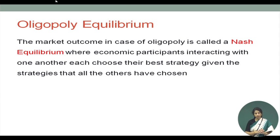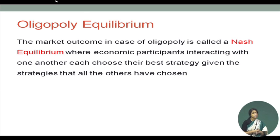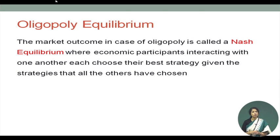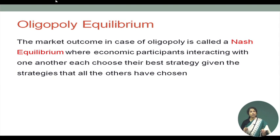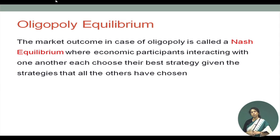As we saw in the earlier example, the firms do not settle at the monopoly outcome. Although the monopoly outcome gives them the highest level of profit, they move on to produce more output, ending up at a market equilibrium where they have no incentive to move away from. Each of the firms ended up producing 40 units of output instead of 30 units, getting a profit of rupees 800 against the monopoly profit level of rupees 900 — had they stuck to the monopoly output of 30 units each.